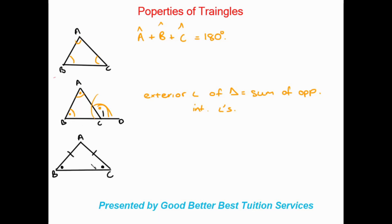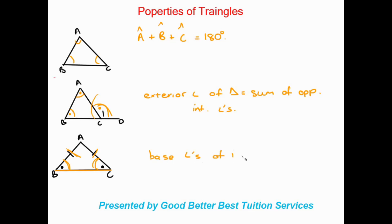Moving on, we have a triangle with two equal sides — that's an isosceles triangle. What we know about isosceles triangles is that as well as the two sides being equal, the base angles are also equal to each other. The base angles are the angles at the line where the two equal sides both meet, which is the base of the triangle.